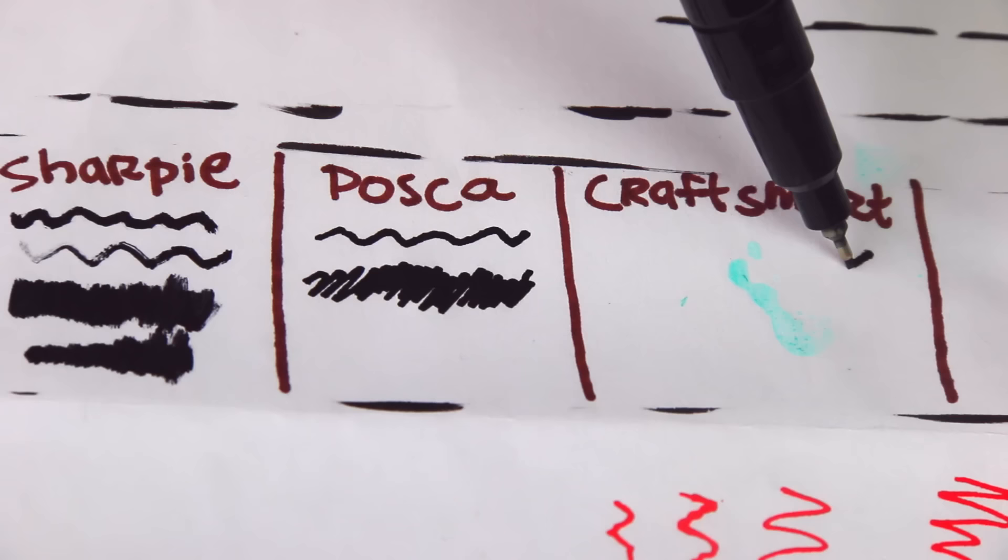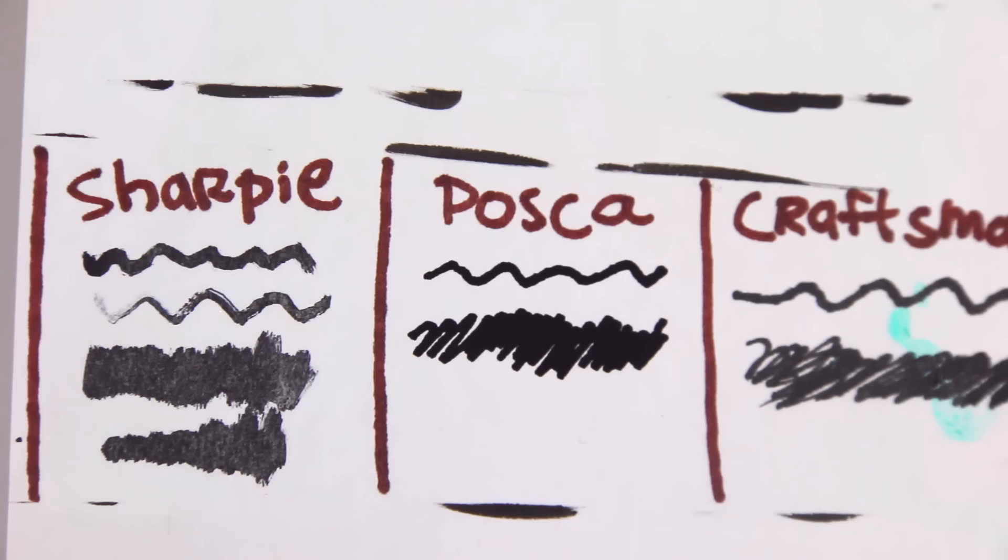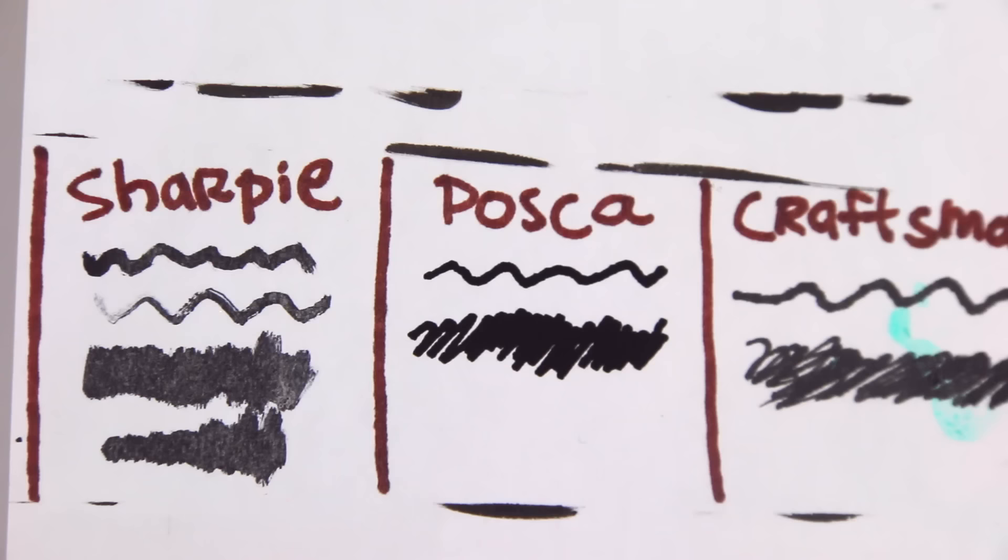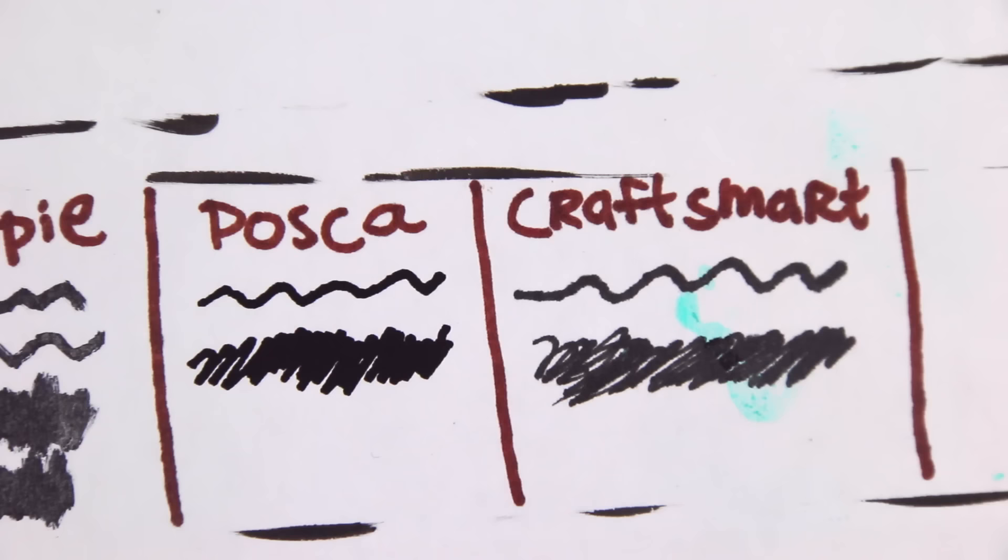It smells so bad. Not dissing the product, because it does work well on glass and plastic and any other thing that you want to do. It's not the greatest on paper, though. As you can see, Posca is the most bold and vivid on paper, so it's the most pigmented black. It's very dark.